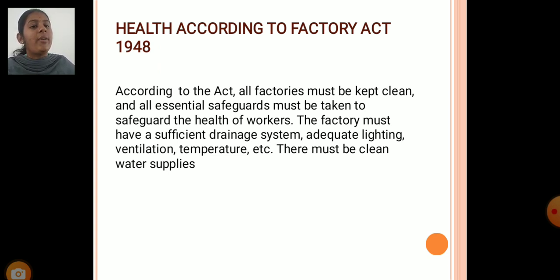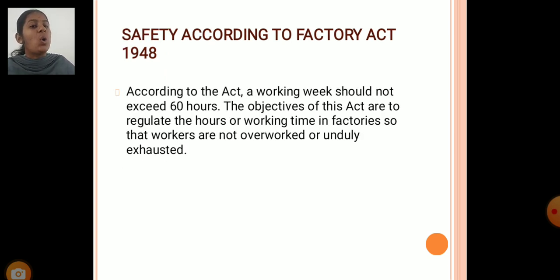Health — according to the Factories Act 1948, all the factories must be kept clean and all essential safeguards must be taken to safeguard the health of workers. The factories must have sufficient drainage systems and adequate lighting and ventilation, temperatures, etc. There must be a clean water supply.